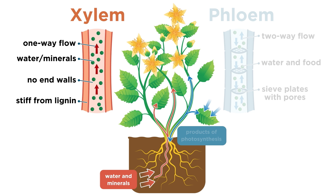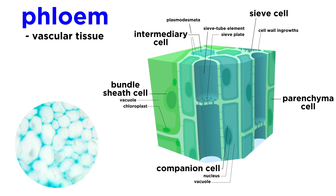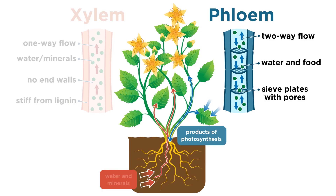So that covers the xylem. The other kind of vascular tissue we mentioned is phloem, and it's composed of living cells called companion cells and sieve cells. Companion cells regulate the function of the phloem, while the sieve cells execute this function. Phloem tissue is responsible for transporting the sugars produced through photosynthesis in the leaves to all of the other parts of the plant. Sieve cells are connected by sieve plates, which are membranes with pores through which the sugar solution can pass.